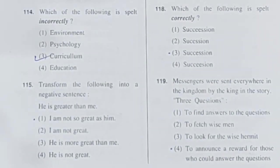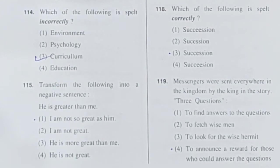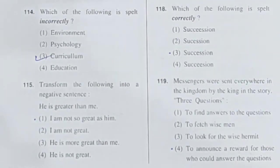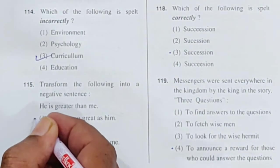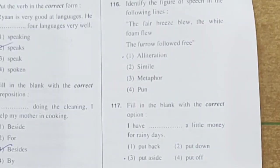Question 115: Transform the following into a negative sentence. 'He is greater than me.' To convert this to a negative sentence: 'I am not so great as him.' This means I am not as great as him. Option 1 is correct.